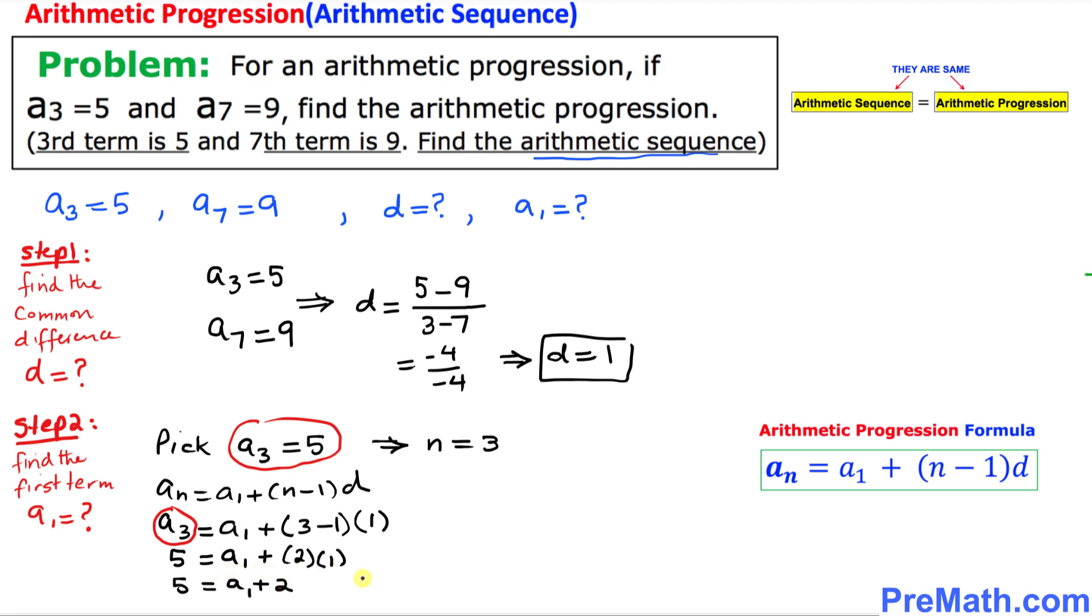Let's move this 2 to the other side, so a₁ is going to be simply 5 - 2. That means a₁ = 3. That is our first term.